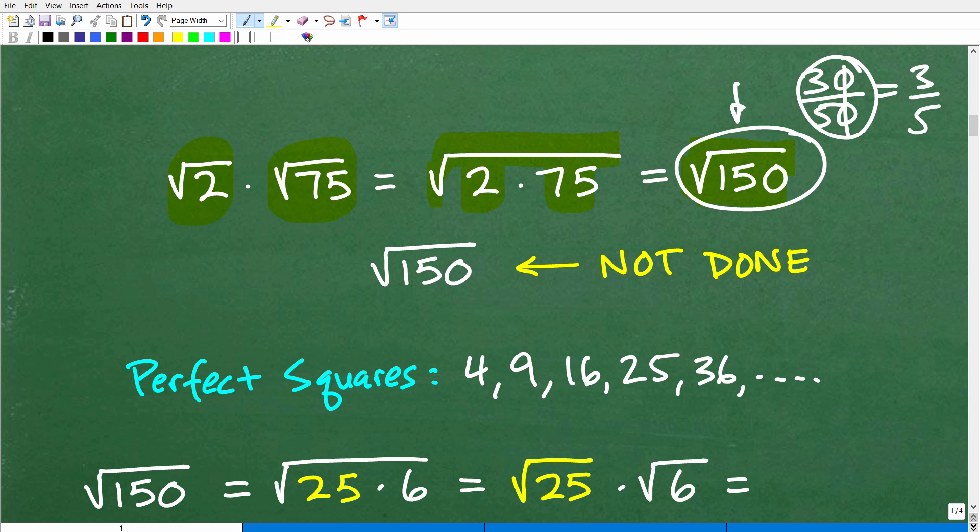It would be very much like you doing a fraction problem and leaving your answer as 30 over 50. Your teacher is going to be like, listen, you need to reduce that and simplify that to three-fifths. So you don't leave your answers unsimplified. In mathematics, it's kind of part of the problem to fully simplify your solutions. So even though the square root of 150 is technically the product of square root of 2 times square root of 75, we need to see if we can simplify this. We're not done yet.